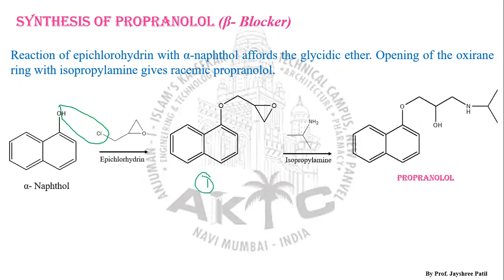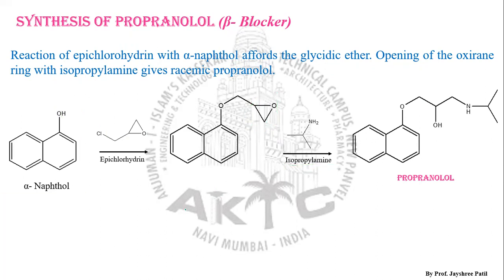Structure one again undergoes reaction with isopropyl amine, where a simple ring opening occurs. This is an oxygen ring, or the epoxide ring, which is a three-membered cyclic ring that is highly strained. So it can be easily broken down — it will get easily opened up when treated with isopropyl amine.